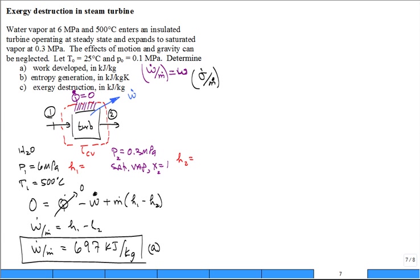Do a second law analysis for the control volume surrounding the turbine. Steady state second law: you have Q dot divided by TB, but it's no heat transfer. Then we have the mass flow rate coming in bringing with it entropy one, going out with entropy two, and then we have some entropy generation.